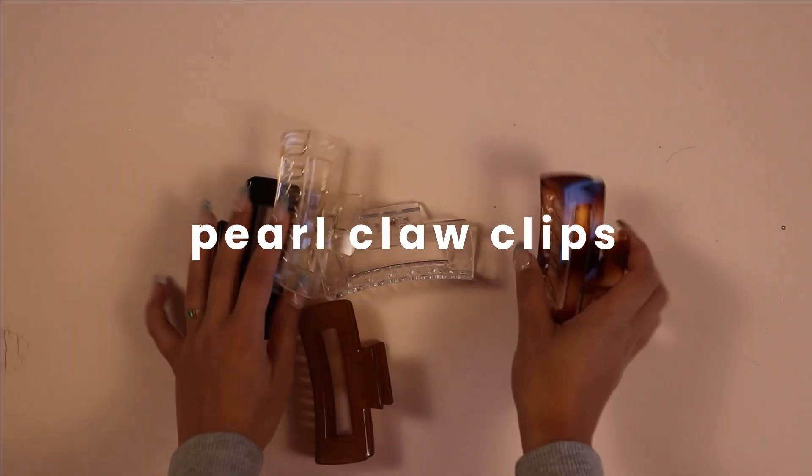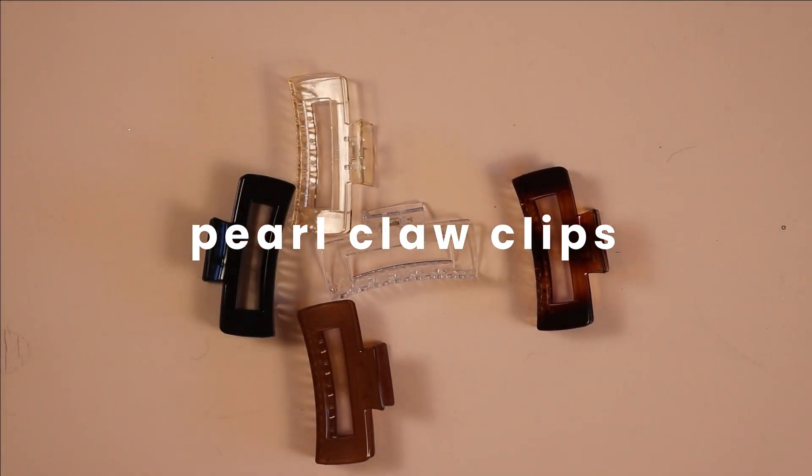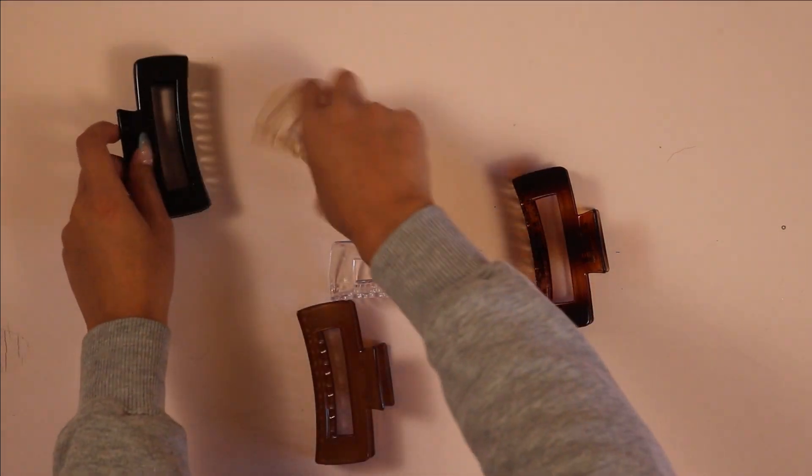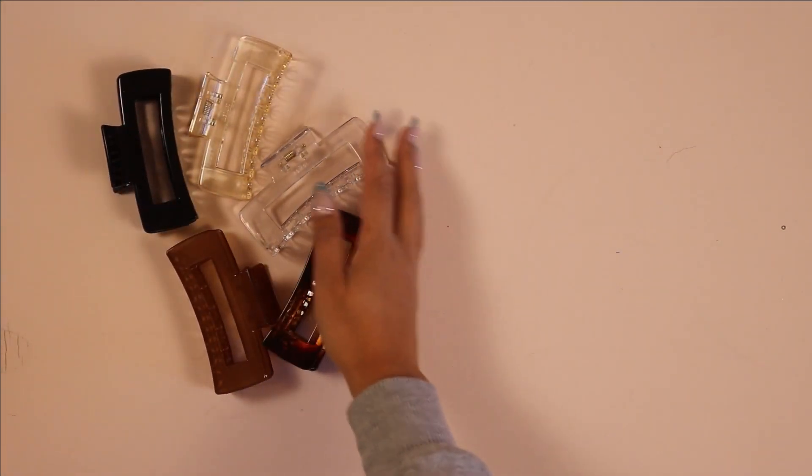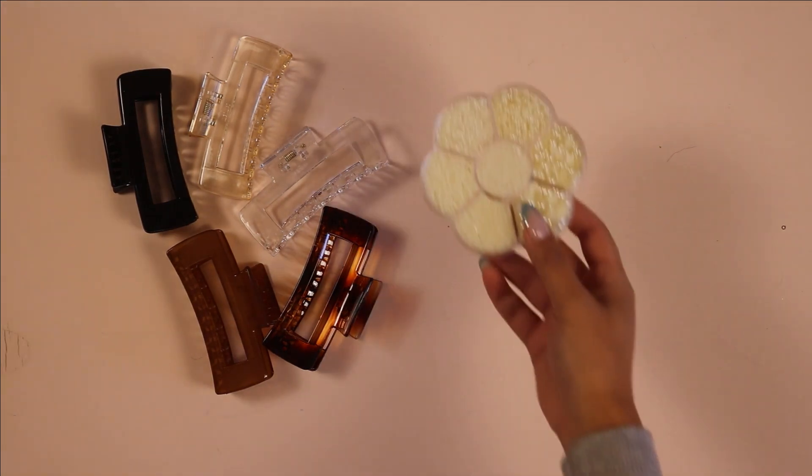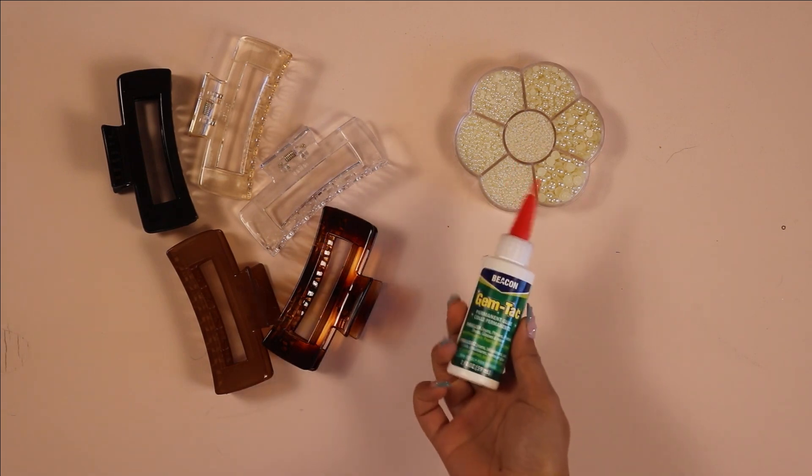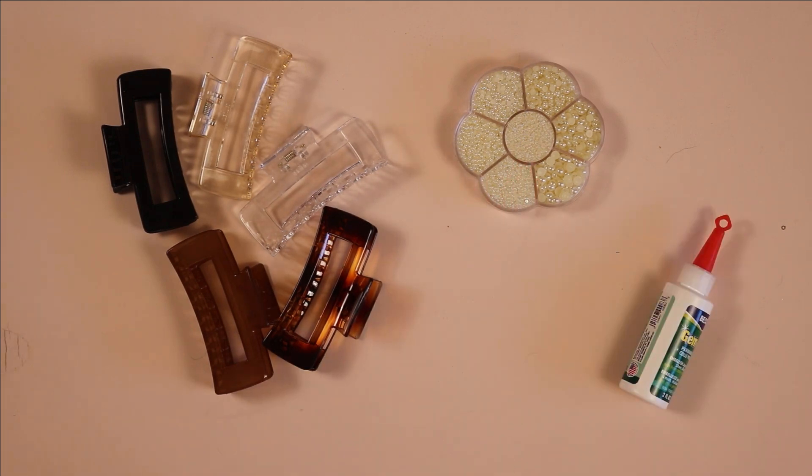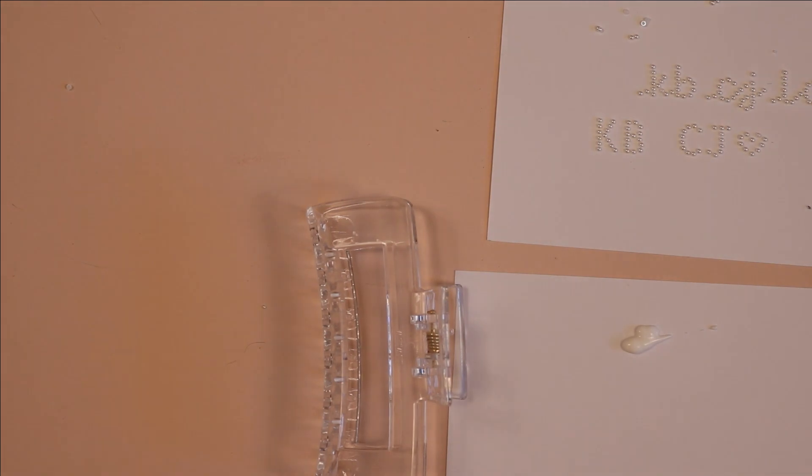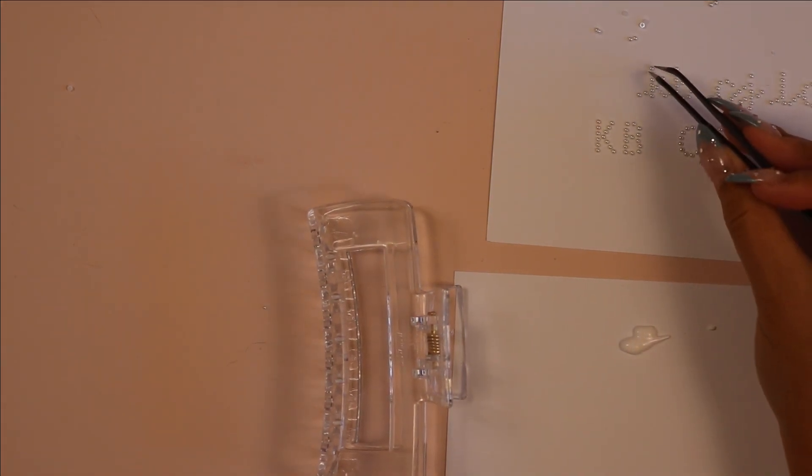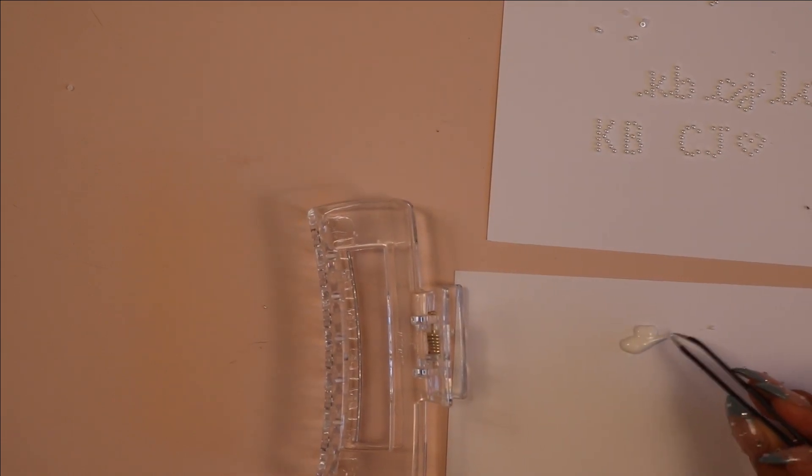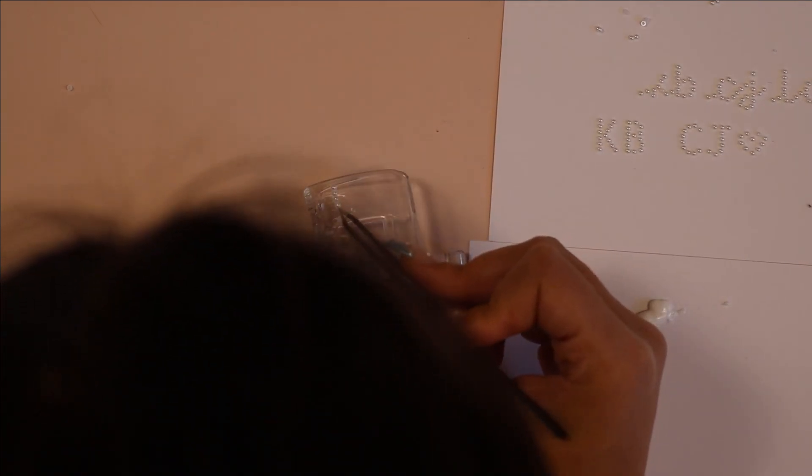Next up are these personalized claw clips. I think this is a great gift for your girl squad. First off, you can get claw clips on Amazon for super cheap. You're going to need either rhinestones or pearls—make sure they have a flat back. I'm using gem tack to tack these on. You can also use E6000. You definitely need tweezers. As you can see here, I already planned out my design on paper with the pearls and took a picture in case it got messed up. This will definitely make your life a lot easier, so I recommend that.